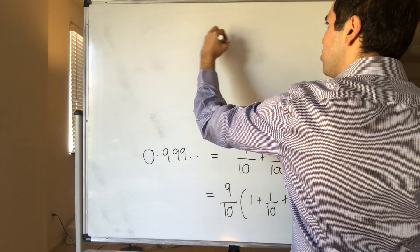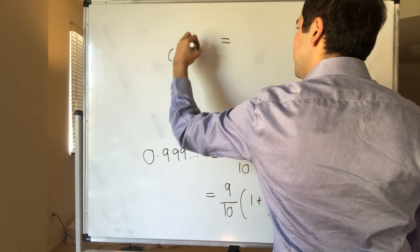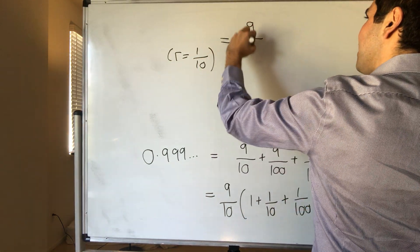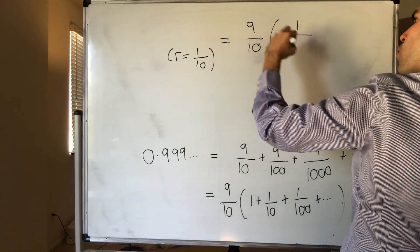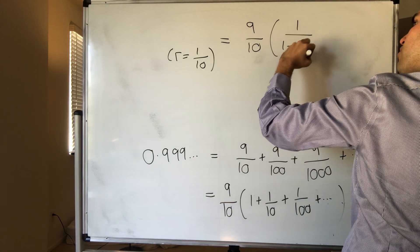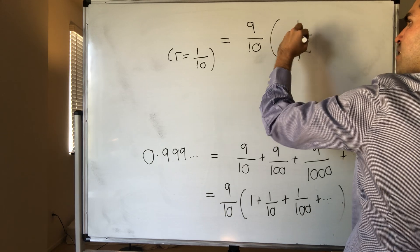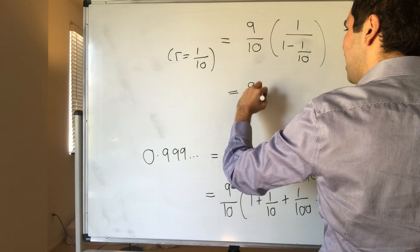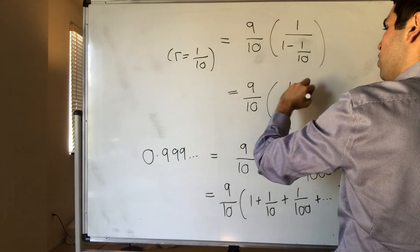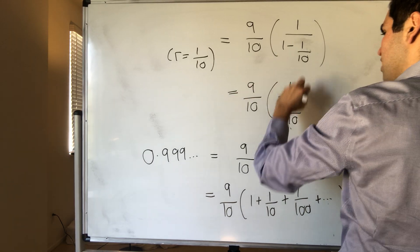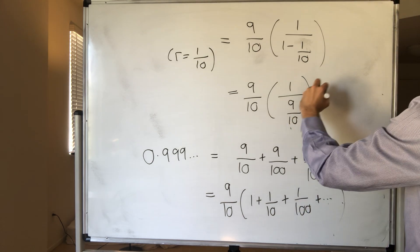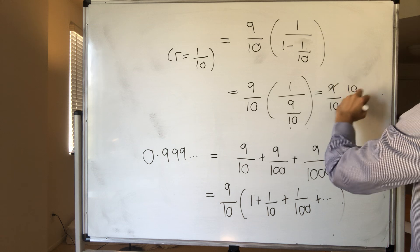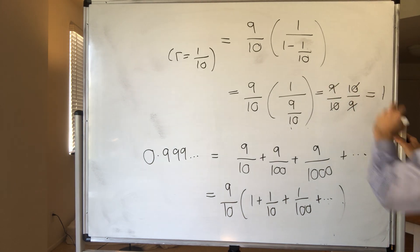So it equals to, again, r is 1 tenth, so again, this factor 9 over 10, over 1 over 1 minus 1 over 10, because that's the factor here, and so it's 9 tenth over 9 tenth, and really that's 9 tenth times 10 over 9, and that's 1.